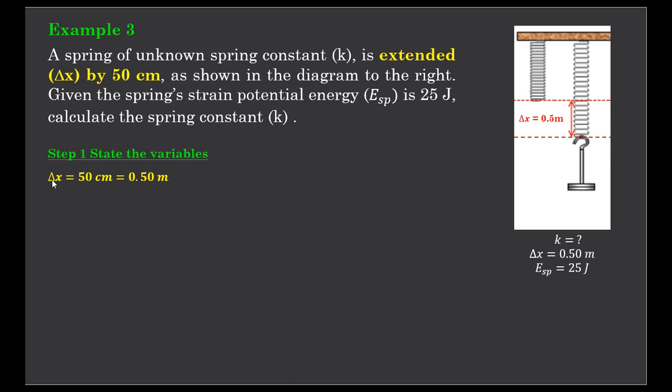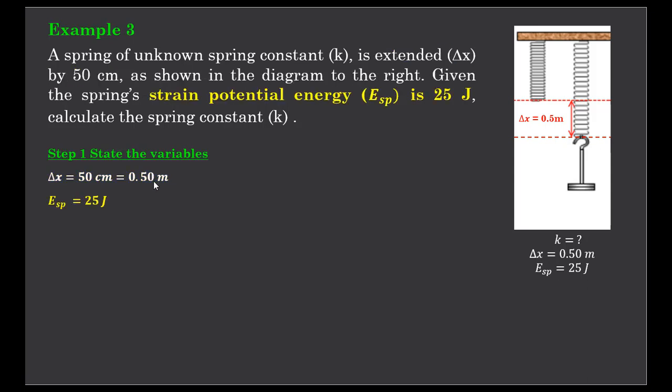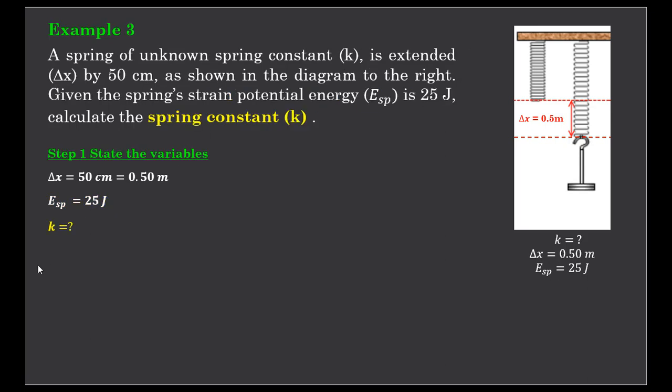So yet again, we write down our variables. The extension is 50 centimeters, we need that in meters so it's 0.50 of a meter. The equation won't work unless the extension is measured in meters. The strain potential energy is 25 joules, so we can write that down. And finally, k the spring constant is what we're trying to solve.